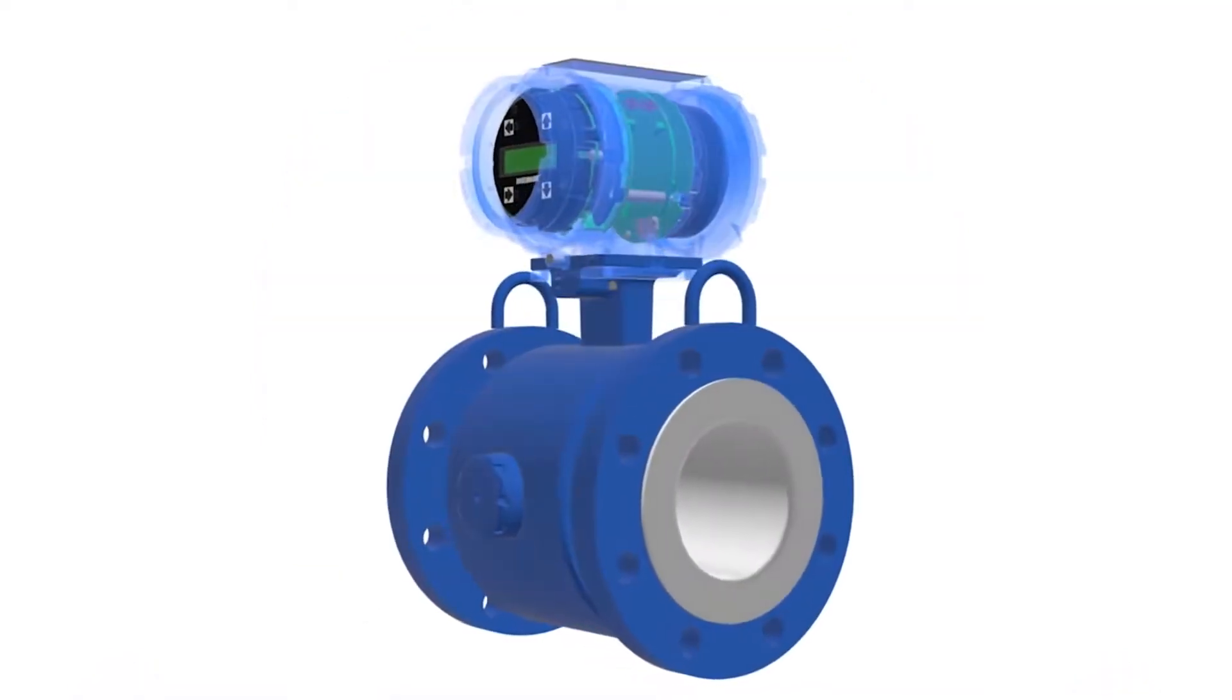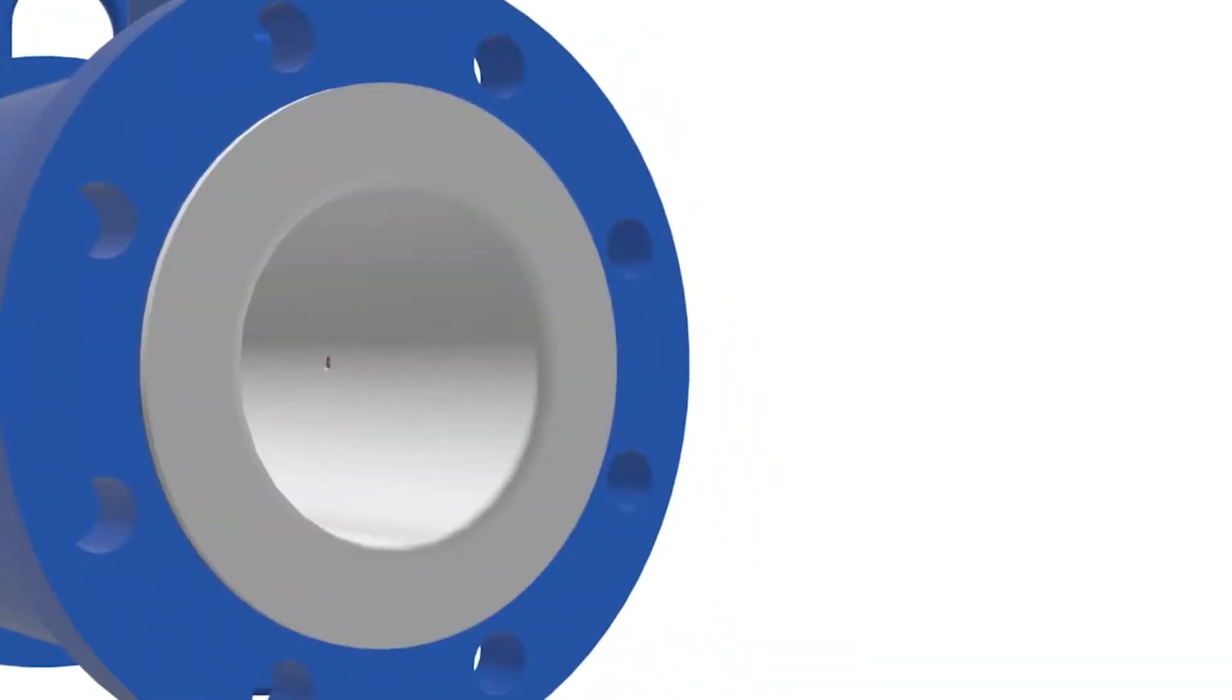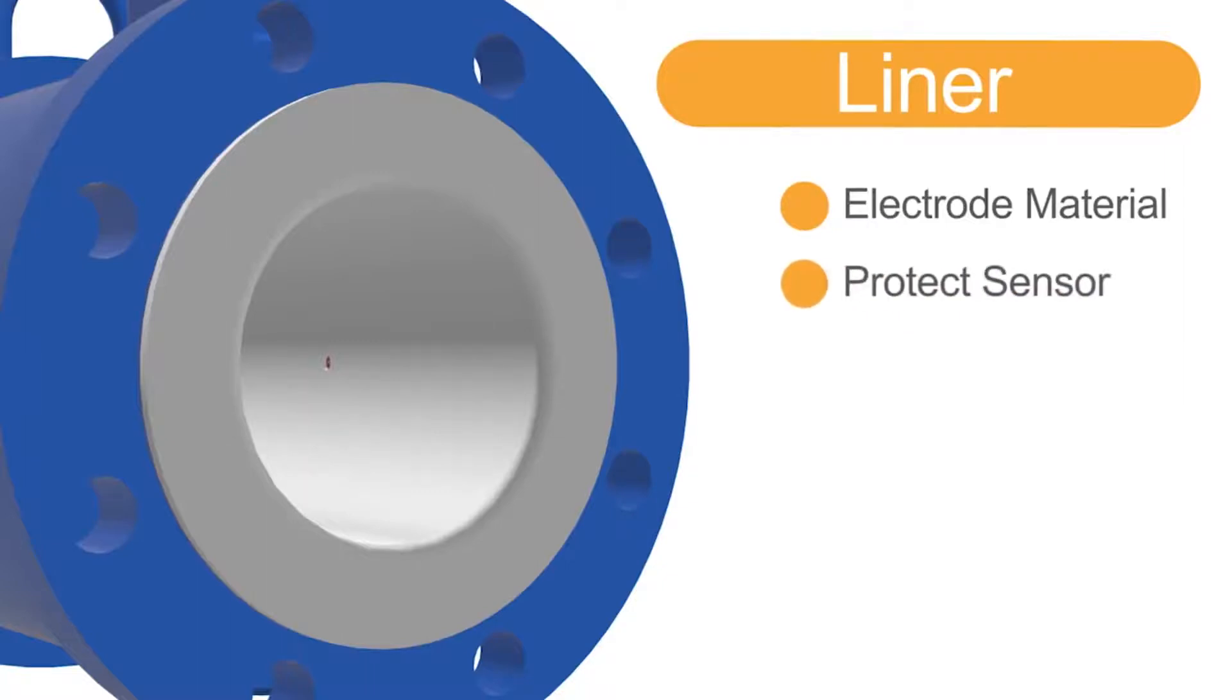To prevent electrical shorts of the sensing component circuitry, the pipe of the flow meter is lined with a special material known as a liner. This liner, along with a selection of the proper electrode materials, is important to protect the sensor against abrasive and corrosive chemicals and solids.